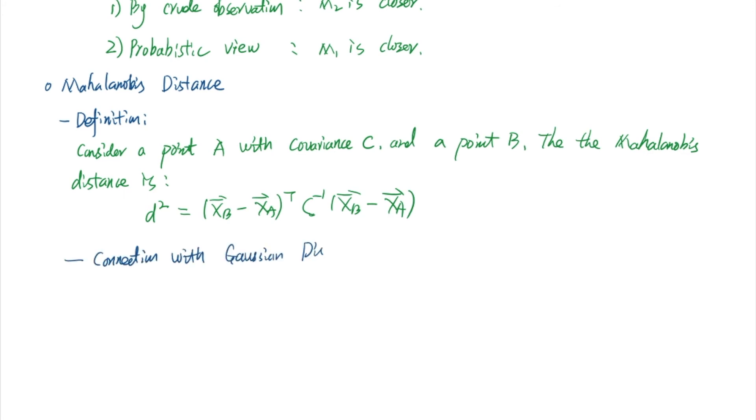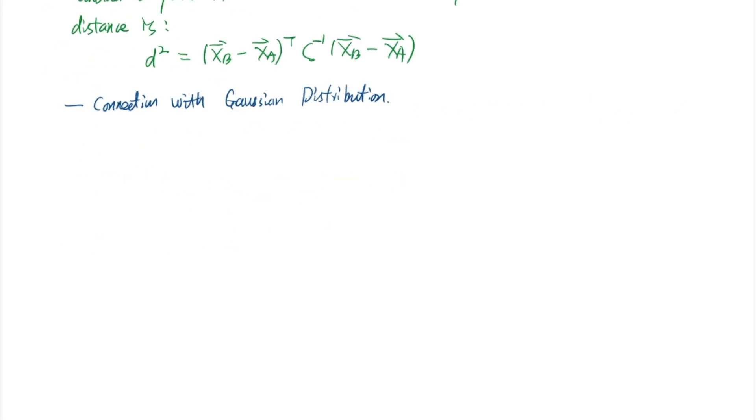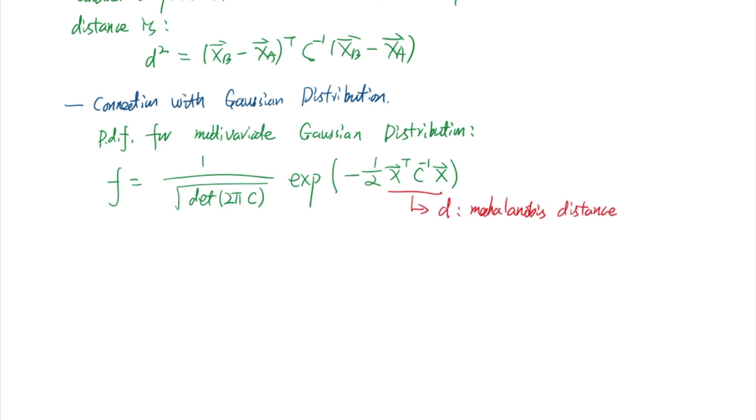Next, we want to draw some connection with Gaussian distribution. Let's look at the probability density function for a multivariate Gaussian distribution. It's given in this format. And we can find that this term is just the Mahalanobis distance. Therefore, the Mahalanobis distance is directly related to Gaussian distribution.